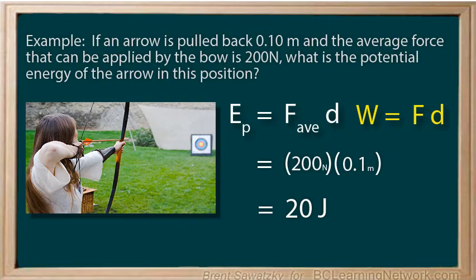So, the same work that we did to this arrow, as we pulled it back in the bow, is now stored as potential energy. And it'll stay stored as potential energy, as long as we keep the arrow in that position.